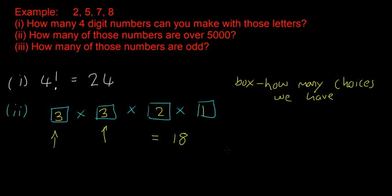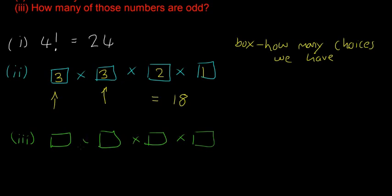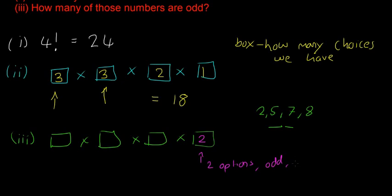Hopefully that makes sense. For part 3 — how many of those numbers are odd — I'll draw 4 boxes again. For a number to be odd it has to end with an odd digit. From our set 2, 5, 7, 8, the odd numbers are 5 and 7, so the last box gets 2 choices. That's why we start at the right side this time, and put 2 in the last box.